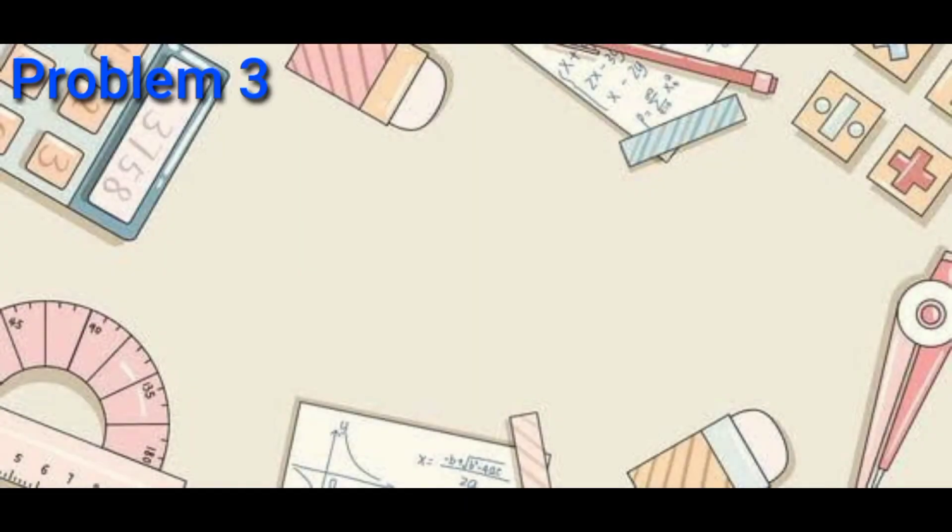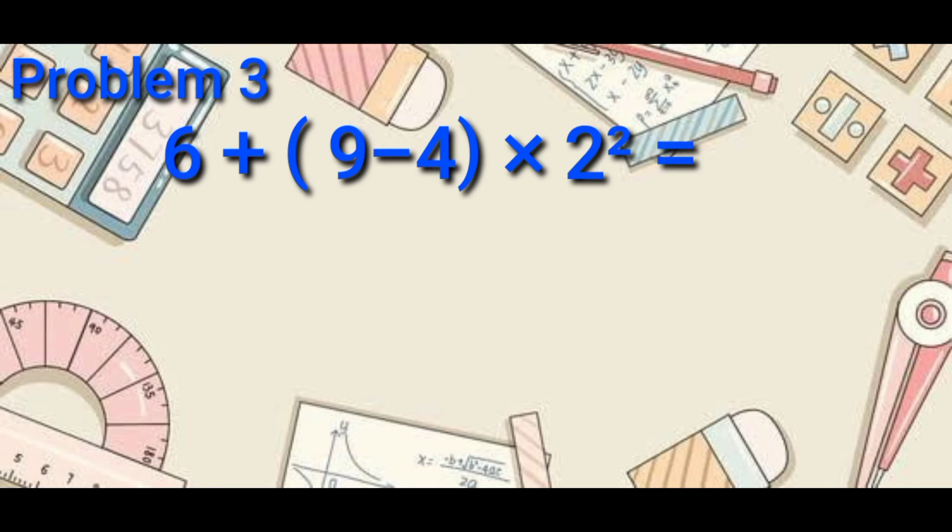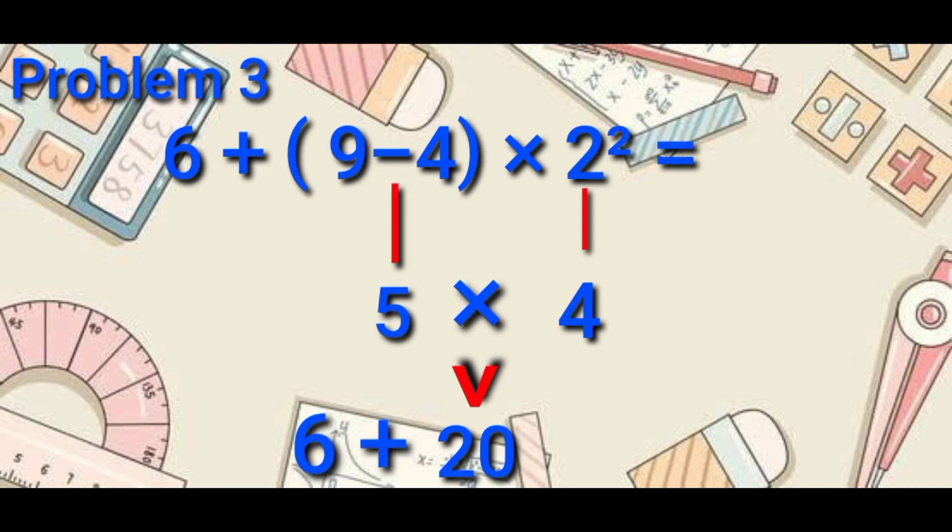And for the last problem. Let's solve 6 plus open parenthesis 9 minus 4 close parenthesis times 2 to the power of 2. Always remember the GEMDAS rule, so let's solve first the group or the parentheses. 9 minus 4 equals 5. Then next, let's get the answer of the exponent 2 to the power of 2, which is 4. Then let's multiply 5 times 4 equals 20. Then lastly, we add 6, so the answer is 26.